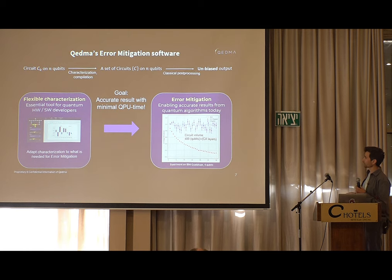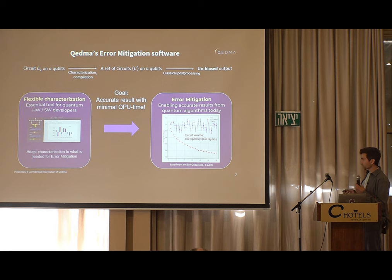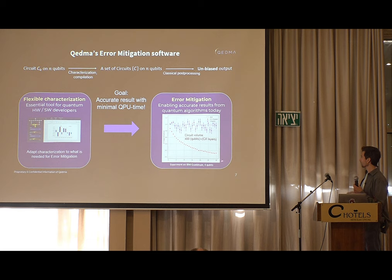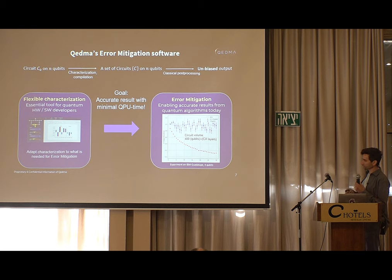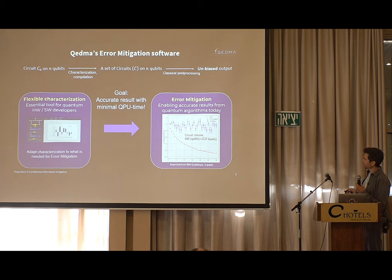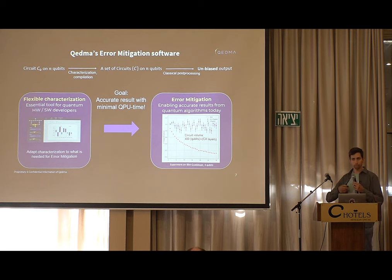The goal is to get an accurate unbiased result with minimal QPU time, starting from detailed characterization. This is a simple experiment on four qubits — a Trotterization of the Ising Hamiltonian going up to 30 Trotter steps. The noisy data decays exponentially, which is not surprising. After error mitigation with our method, the blue data points reproduce the ideal result up to statistical errors. If you want smaller errors, you just pay more in QPU time.